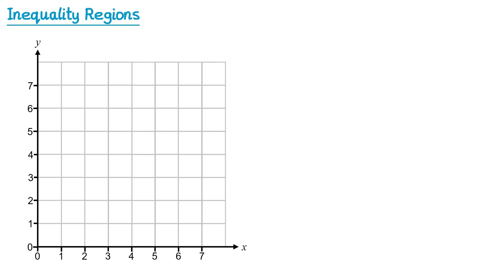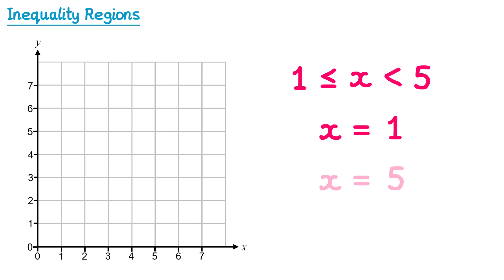Sometimes you may get examples with two parts to the inequality, like 1 ≤ x < 5. This says x is between 1 and 5: allowed to equal 1 but not equal to 5. For this we draw two lines: x = 1 and x = 5. Since it's less than or equal to on the left, we use a solid line at x = 1. Since it's just less than on the right, we use a dotted line at x = 5. We then shade all points between the two lines and label the region R.